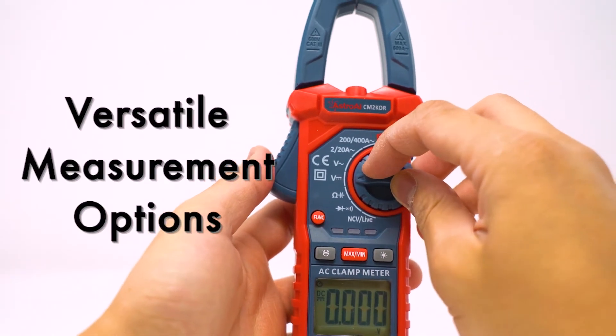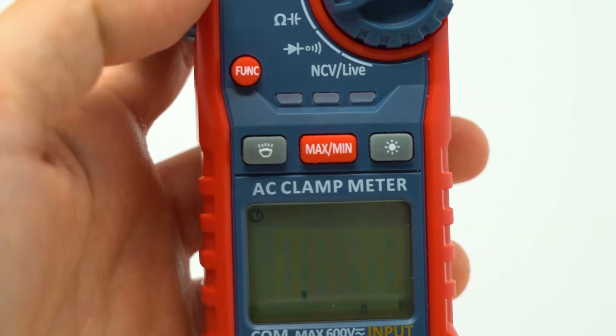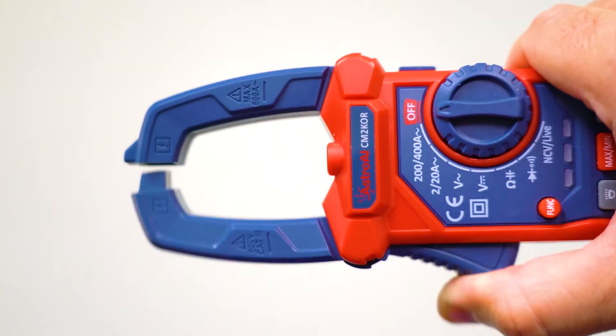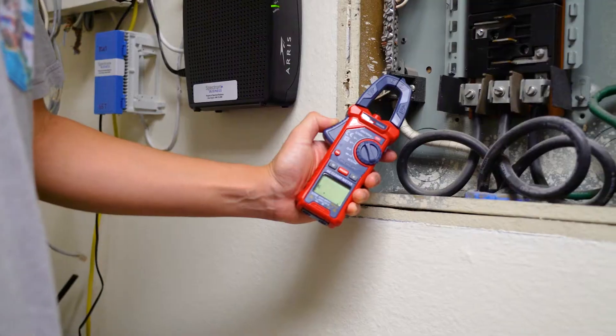Select the measurement mode with the rotary dial and use the function button to change the unit of measurement. Press the trigger to open the jaws in order to safely test AC current.